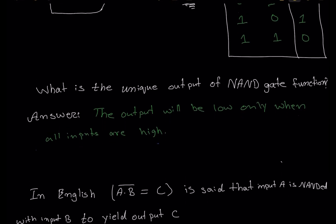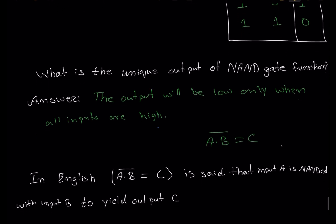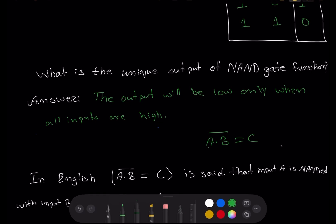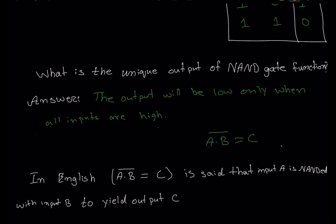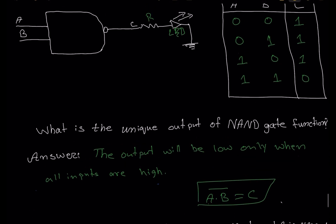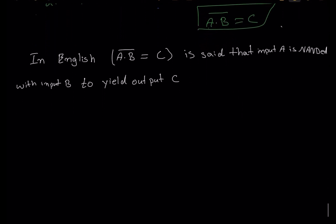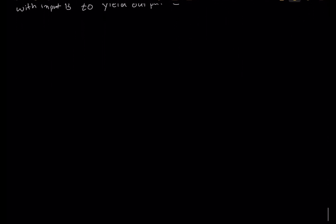Moving on to the question: what is the unique output of the NAND gate function? The output will be low only when all inputs are high. That is the unique condition of the NAND gate — all inputs are high but the output is low because the signal is inverted. In English, we say: input A is NANDed with input B to yield output C. That is the wording in English, along with the Boolean expression and the truth table.